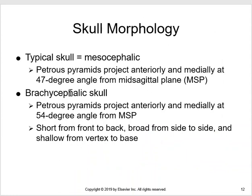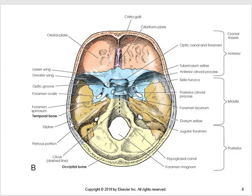A brachycephalic skull is a very rounded skull, characteristically seen in patients with Down syndrome — they have a very round head. It's less oval, more round, and that takes the angulation of the petrous ridges from 47 degrees and pushes them to about 54 degrees, giving a much broader, more lateral appearance to the petrous ridges.